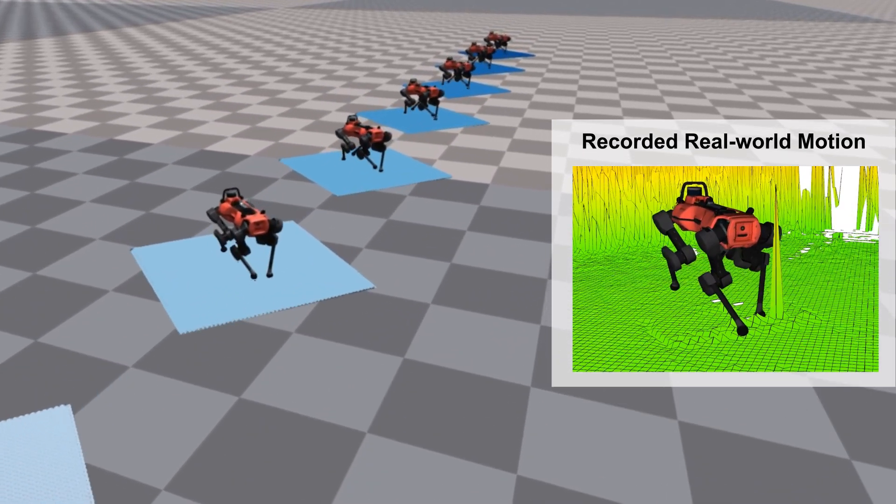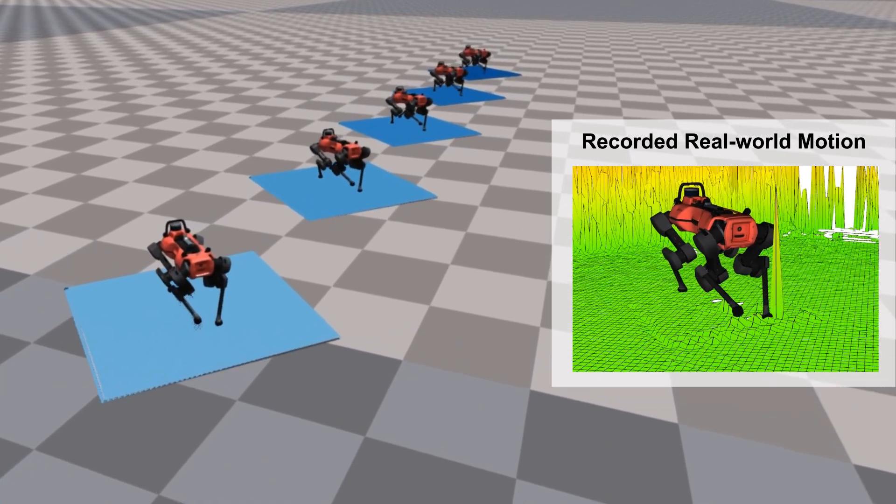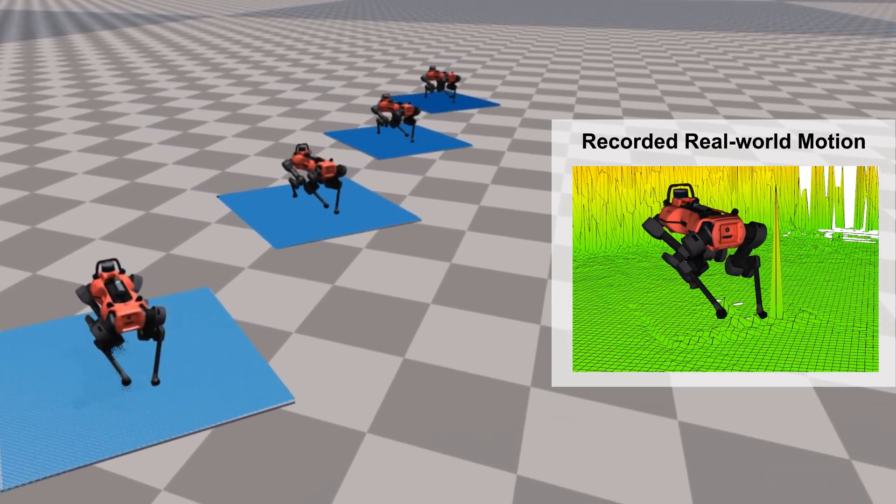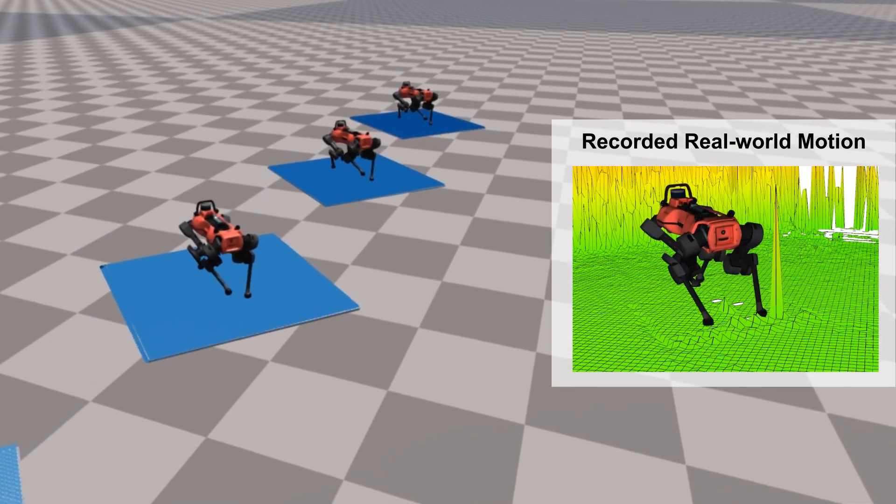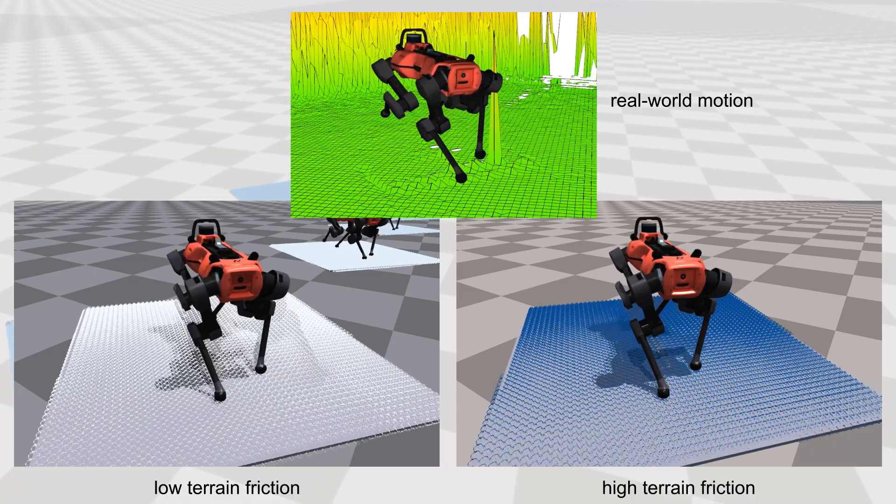By assigning each instance a different terrain friction value uniformly from range 0 to 1, we can identify the friction range with the lowest motion error. This range can then be used as the estimated friction parameter range of the real-world. Here are two examples showcasing the different resulting motions.